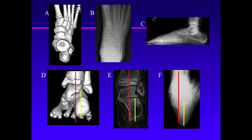These X-rays and CT scan images show that quite well — the axis of the calcaneus is lateral to the axis of the tibia. So if the soft tissues are released, or a tarsal coalition is resected, the subtalar joint will be able to evert away from those tight structures.